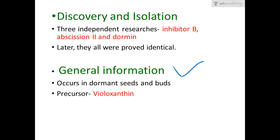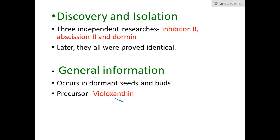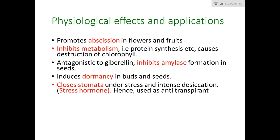The general information about abscisic acid: it occurs in dormant seeds and buds. This is a typical inhibitor plant growth regulator — not a mixed type like ethylene. Its precursor is violaxanthin, the first compound used to prepare abscisic acid.